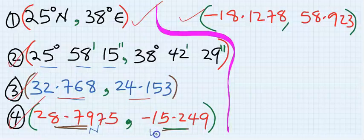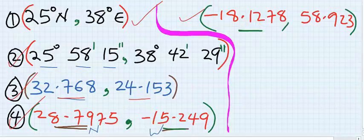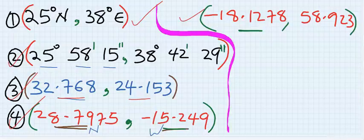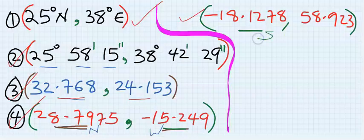Consider this: because this comes first, that is the latitude. However, because it has a negative, that means this is the south. And this comes second, that is the longitude, and because it's a positive, that means this is east.